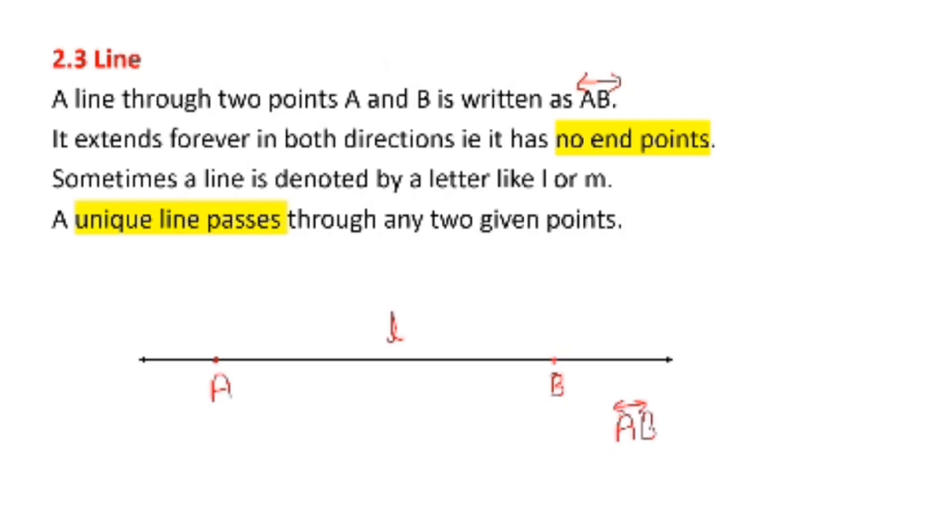A unique line passes through any two given points. This means that if you have two points, now there is just one line that would pass through these two points. There is no way we can have one more line. There is just one line that can pass through two points.